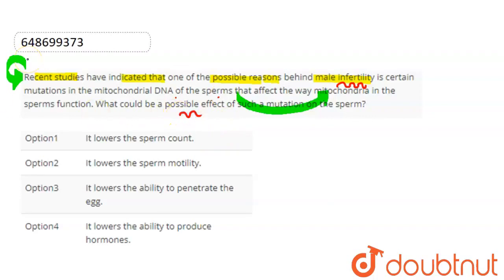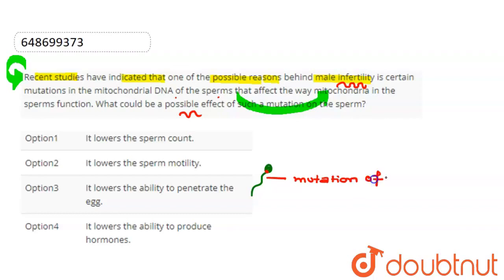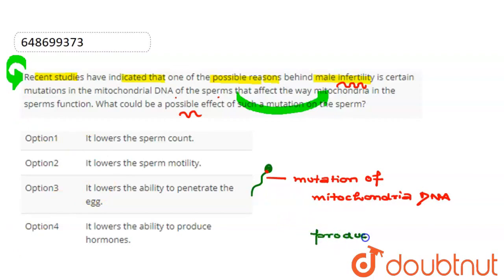Simply, if we look at the question — male infertility means the male is not able to fertilize the female. Basically, when mutations occur in the mitochondrial DNA of sperm, we need to identify the possible effects. The major role of mitochondria in sperm is producing the energy for the movement of the sperm.